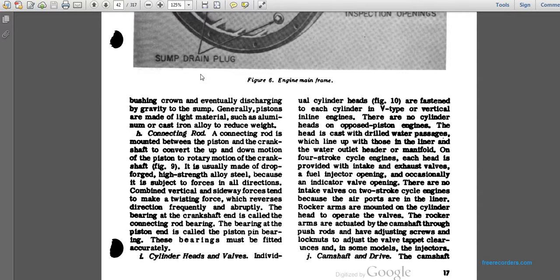Pistons are generally made of light materials such as aluminum or cast iron to reduce weight. The connecting rod is mounted between the piston and crankshaft to convert the up-and-down motion of the piston into rotary motion of the crankshaft. The crankshaft is usually made of drop-forged, high-strength alloy steel because it is subject to forces in all directions — vertical, lateral, and torsional — which reverse direction frequently and abruptly. The bearing at the crankshaft end of the connecting rod is called the connecting rod bearing; the bearing at the piston end is called the piston pin bearing.